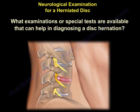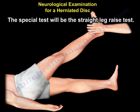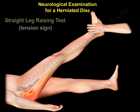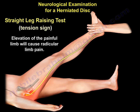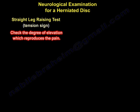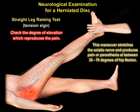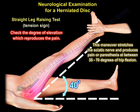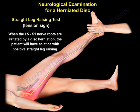The special test for diagnosing disc herniation is the straight leg raise test. If you elevate the painful limb, it will cause radicular leg pain. Check the degree of elevation that reproduces the pain — this maneuver stretches the sciatic nerve and produces pain or paresthesia at between 35 to 70 degrees of hip flexion. When the L5-S1 nerve roots are irritated by a disc herniation, the patient will have sciatica with a positive straight leg raise, called the tension sign.